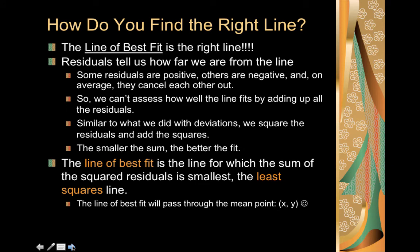The line of best fit, then, is the line for which the sum of the squared residuals is smallest, which we also call the least squares line. We're going to talk more about this in class, we're going to watch a video and discuss it. This is important, so I want to emphasize this. The line of best fit will always pass through the mean point x̄ and ȳ. That point will always be on the line.